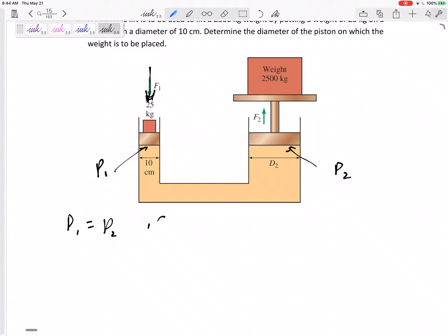If they weren't at the same height it might be p1 plus rho g h equals p2, like problems we've done, but they are equal to each other.